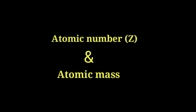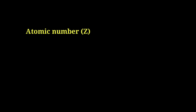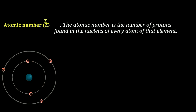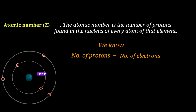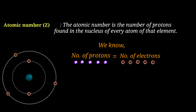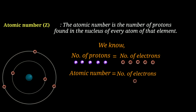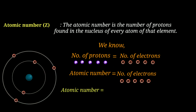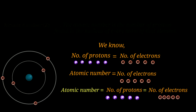This is the discovery of the neutron model. The atomic number is represented by the letter Z. The atomic number is equal to the number of protons and the number of electrons. We can see the formula: atomic number equals number of protons equals number of electrons.